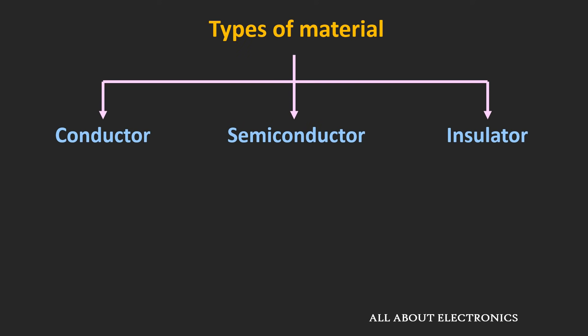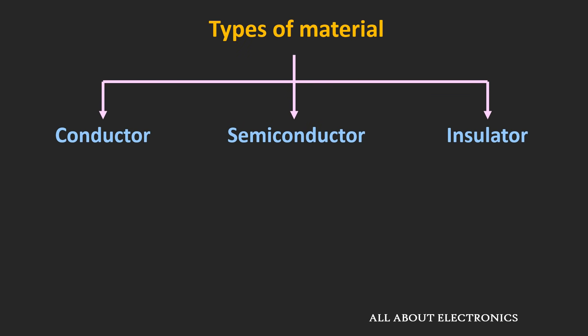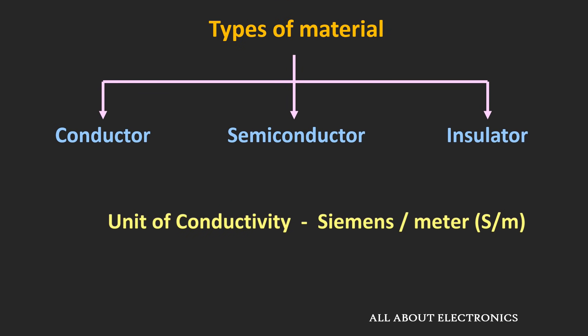In terms of conductivity, materials are classified into three categories: conductor, insulator, and semiconductor. For any material, conductivity defines how easily the material allows the flow of charge, and this conductivity is measured in siemens per meter.